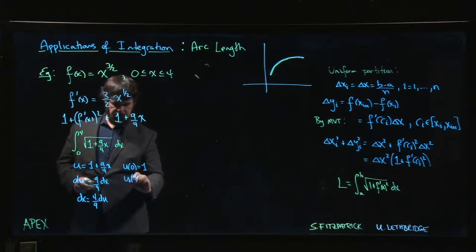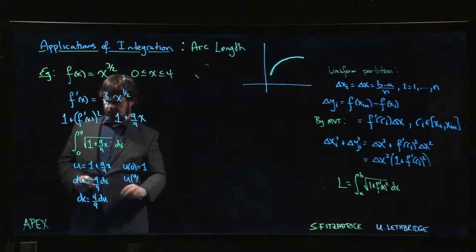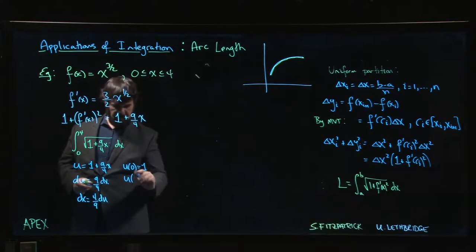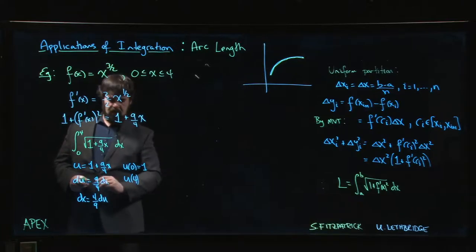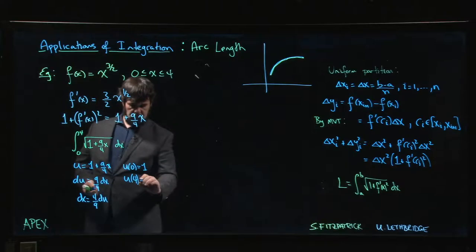When x is equal to 4 - sorry, getting ahead of myself - when x is equal to 4, u is equal to 1 plus 9 over 4 times 4